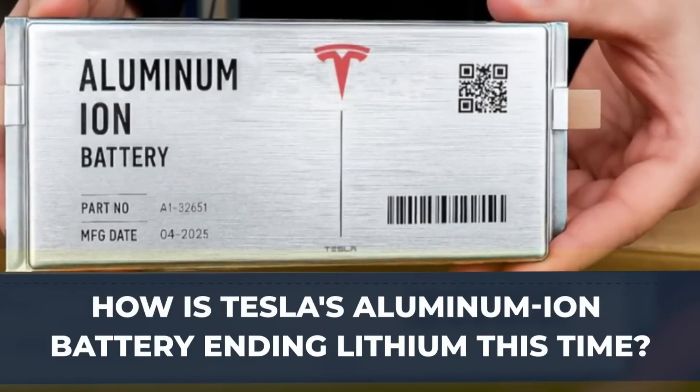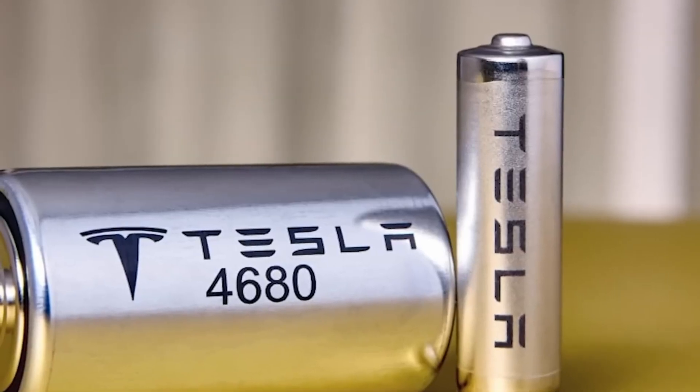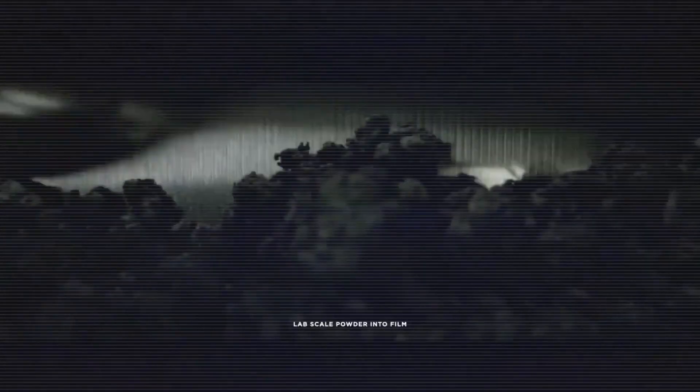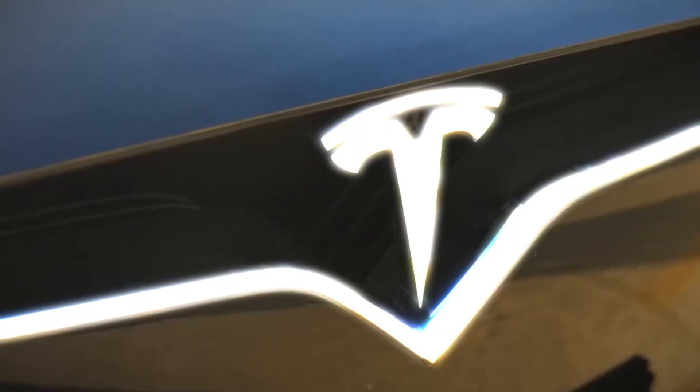Aluminum-ion batteries don't form dendrites at all. They're stable from minus 40 degrees to 85 degrees Celsius, far beyond the range lithium can handle safely. That means no risk of thermal runaway, no risk of battery fires, and no need for costly cooling systems.